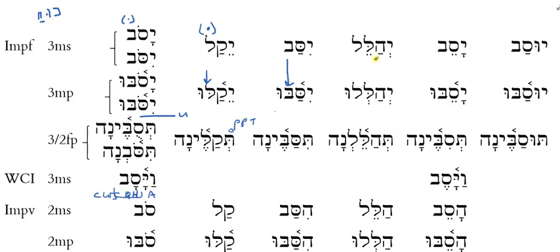The imperfect is all very normal as well. Yehalel, he will praise; yehaleloo, they will praise; tehalelna, they or you — feminine plural — will praise. Notice that the doubling dot is in root 2 in all these situations, because Piel is characterized by doubling in root 2.